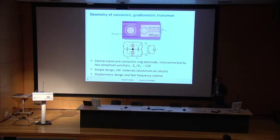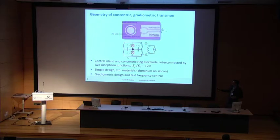We have our own type of transmon we call a concentric transmon. You can see the qubit here: there's a disc and an outer ring, which are the two metal plates forming the capacitor.